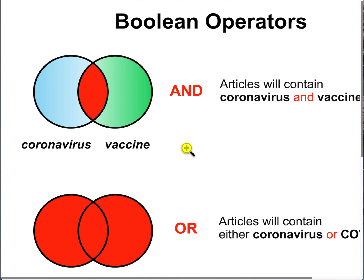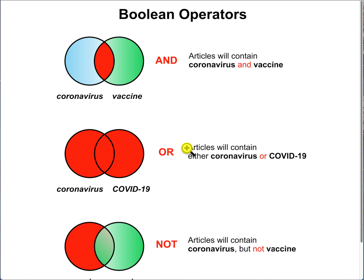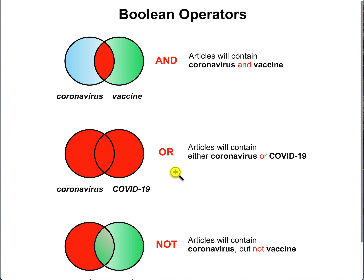There are three main types of boolean operators: AND, OR, and NOT. You place these operators between keywords to narrow or broaden a search. With the AND operator, for example, 'coronavirus AND vaccine' instructs the database to retrieve all documents that contain both terms — this narrows your search. With the OR operator you broaden the search and often use it with synonyms, so 'coronavirus OR covid19' tells the database to retrieve all documents containing either term.